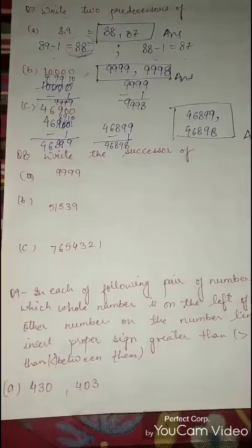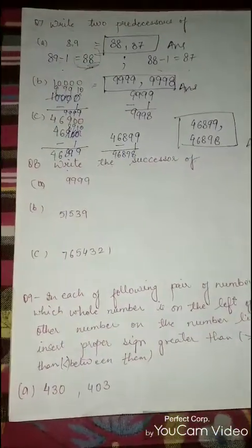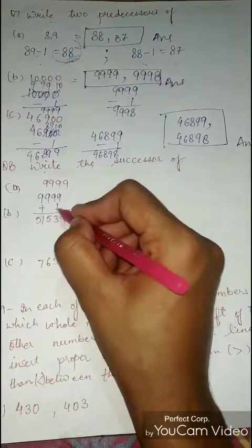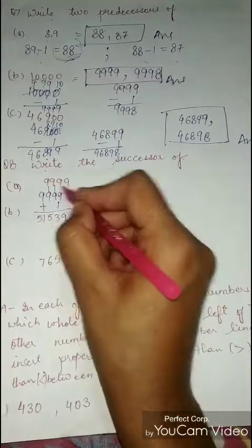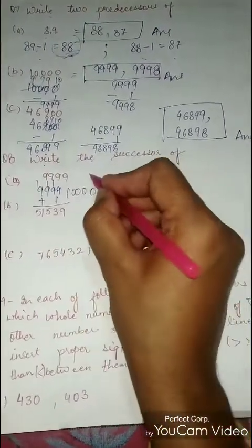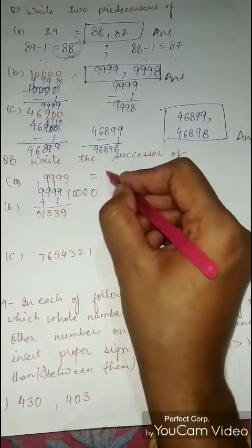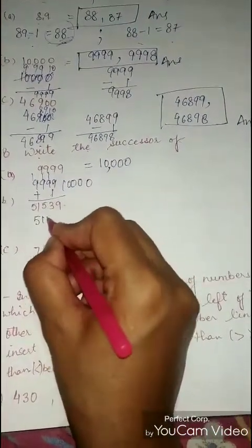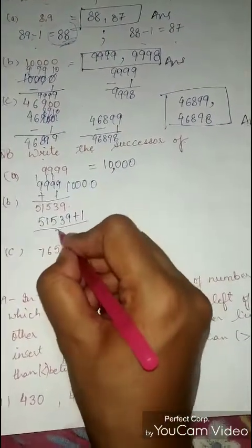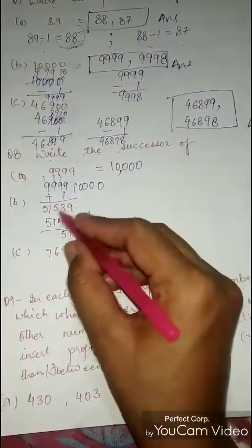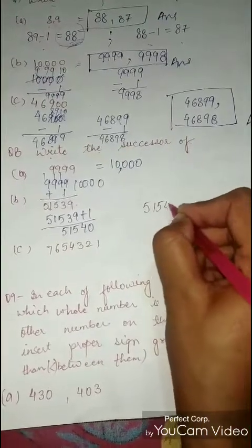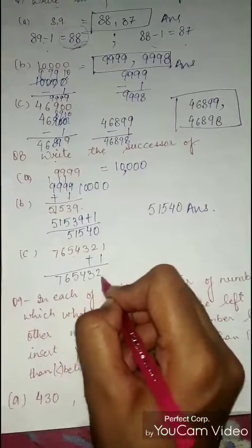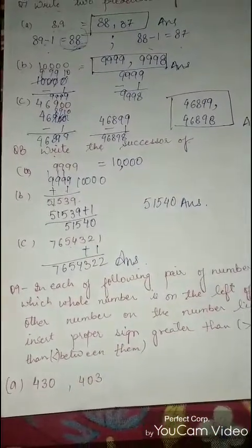Write the successor of the following. In successor, we add 1 to the number. The successor of 9999 is 10000. The successor of 51539 is 51540. The successor of 765431 is 765432. I hope you understood what is predecessor and what is successor.